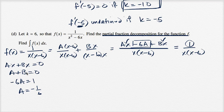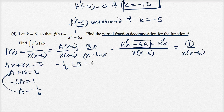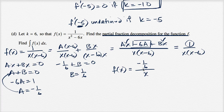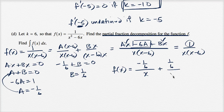Since a is negative one sixth, b is the negative of that. Substituting back: negative one sixth plus b equals zero, so b equals one sixth. Therefore, f of x decomposes as negative one sixth over x plus one sixth over x minus six. That's the partial fraction decomposition for f.